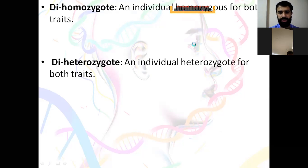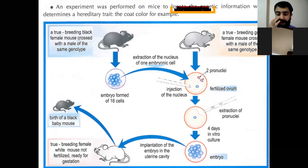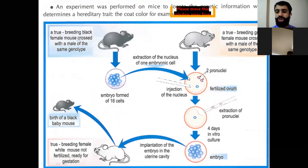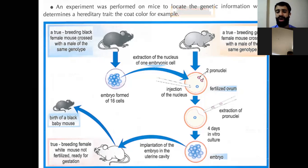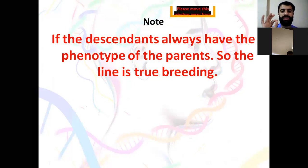These are the different terms about homozygous and heterozygous. An experiment was performed to locate genetic information: a true breeding female crossed with a male of the same genotype — two true breeding lines, gray and black. The embryo cell nuclei were extracted and injected into a fertilized ovum. The pronuclei were transplanted into a uterine cavity, and the result was the birth of a male baby mouse. This indicates that genetic information is located inside the nucleus, not in the cytoplasm or in the uterus of the foster mother (the white mouse), which served only for gestation.